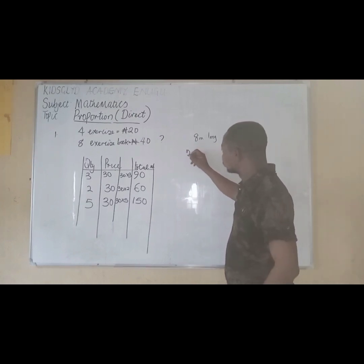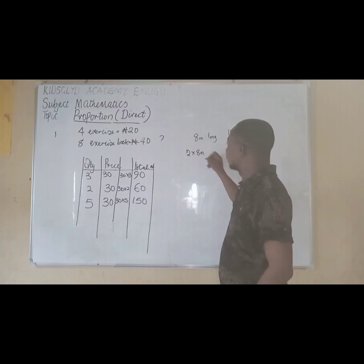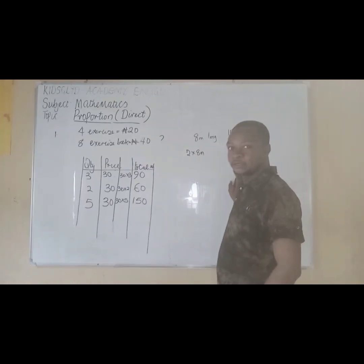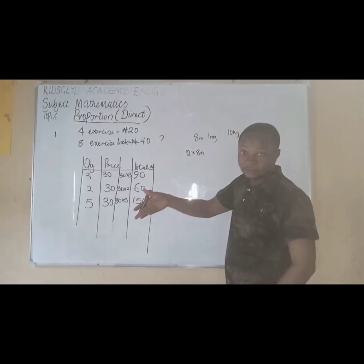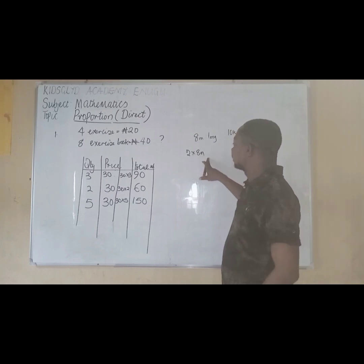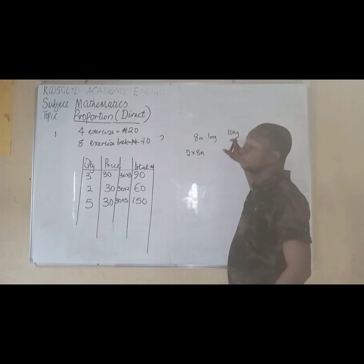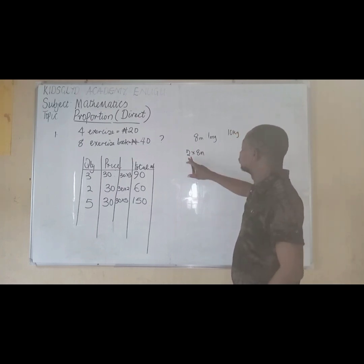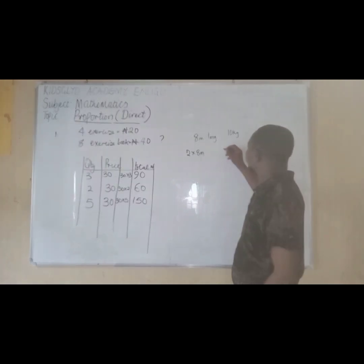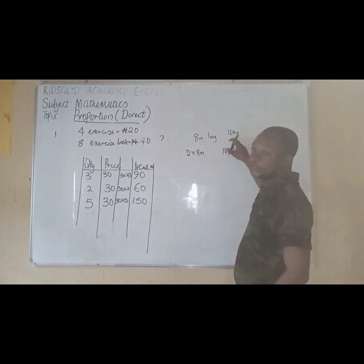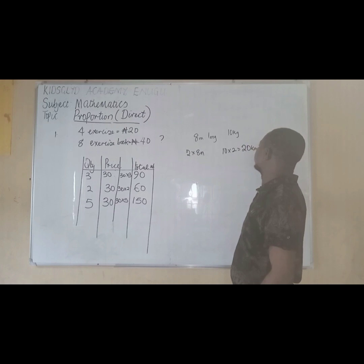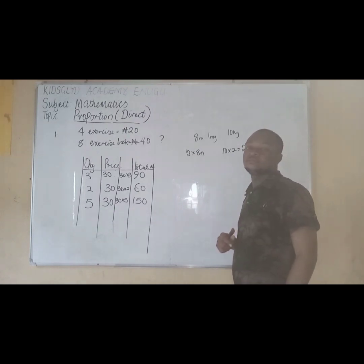If two of these rods are kept together, what do you expect? The weight will increase twice — times 2. That means for 8 meters long, since the number has been multiplied by 2, the weight will also be multiplied by 2, so the weight will become 20 kg. That is what proportional means for you.